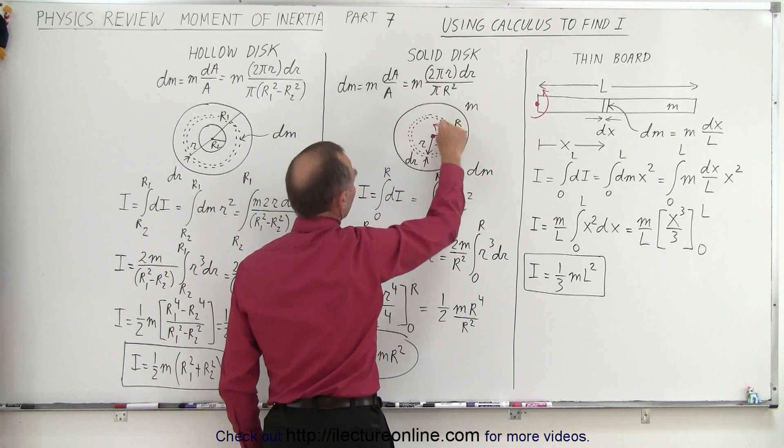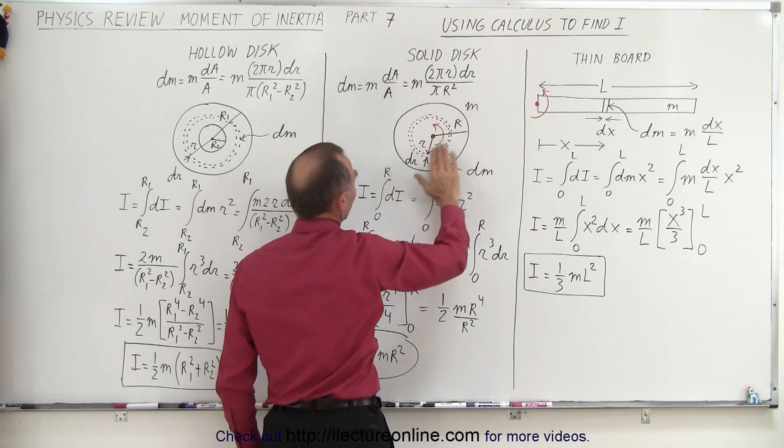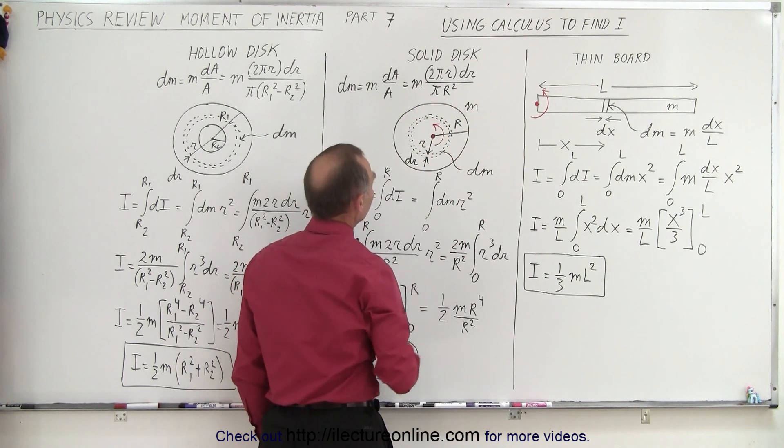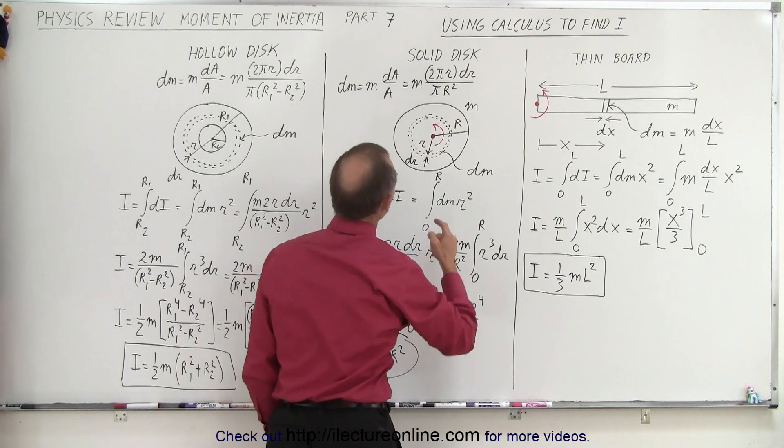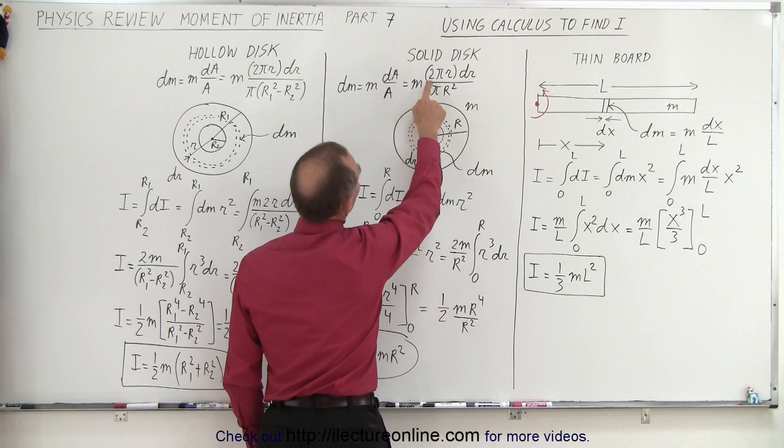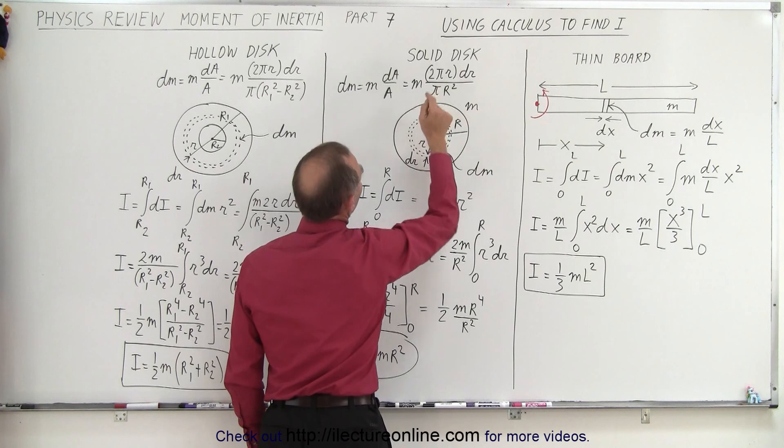All right, the area that's a little ring is going to be the circumference 2 pi r times the width dr. So that's the area of the small little ringlet. We divide it by the area of the whole disk, which is pi r squared. Notice that the pi's cancel out, so dm ends up being m times 2 r dr over r squared.